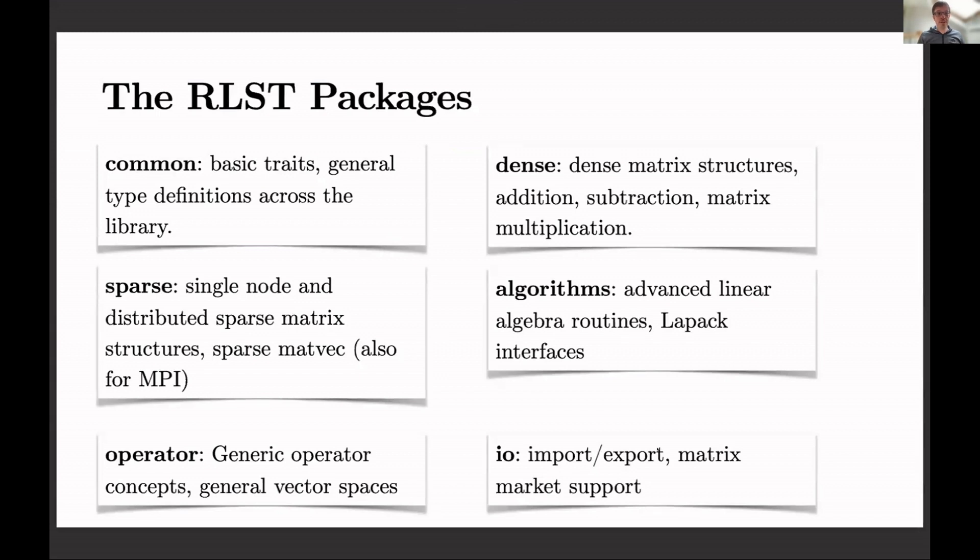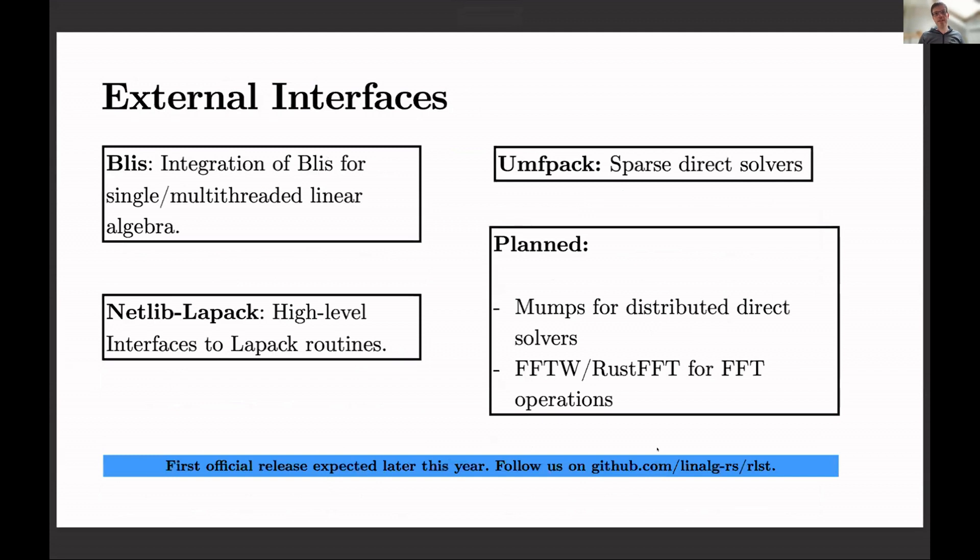In terms of what we have in the package, just an overview. We've got common package, sparse operators, dense algebra and IO package sub-package. We have external interfaces. We're using BLIS by default for our BLAS support because BLIS allows us to change threading at runtime between single thread and multi-thread. It's very important for a lot of our applications for other people as well. You can change threading at runtime. We have a nice, very high-level interface to netlib LAPACK routines, which is growing and growing in terms of size. So you can just say dot linear dot LU, we get LU decomposition by netlib and BLIS and all this kind of nice stuff.